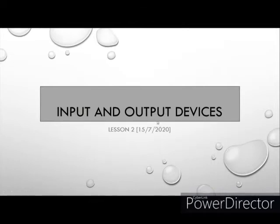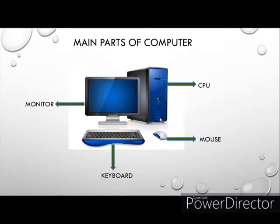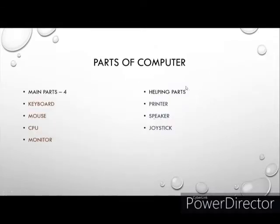Dear children, last class we learned about the different parts of the computer. Monitor, keyboard, mouse, and CPU are the main parts of the computer. There are also some other parts called helping parts. Helping parts help the computer to do some special functions. Parts of the computer are mainly divided into two: main parts and helping parts. There are four main parts — keyboard, mouse, CPU, and monitor — and examples of helping parts are printer, speaker, and joystick.